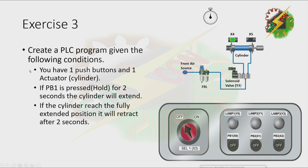Exercise 3: Create a PLC program given the following conditions. You have one push button and one actuator. If PB1 is pressed for 2 seconds, the cylinder will extend. If the cylinder reaches the fully extended position, it will retract after 2 seconds.